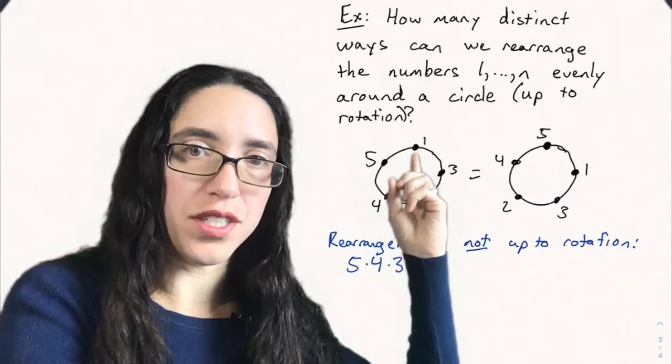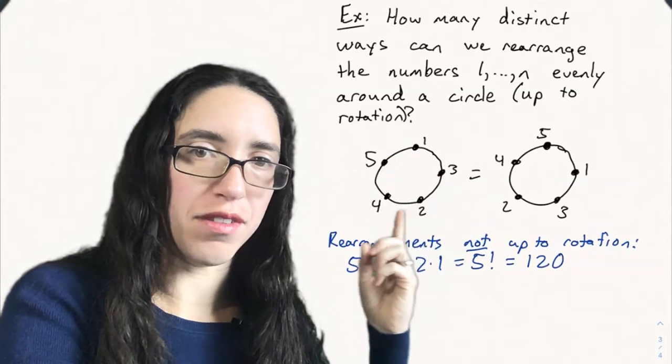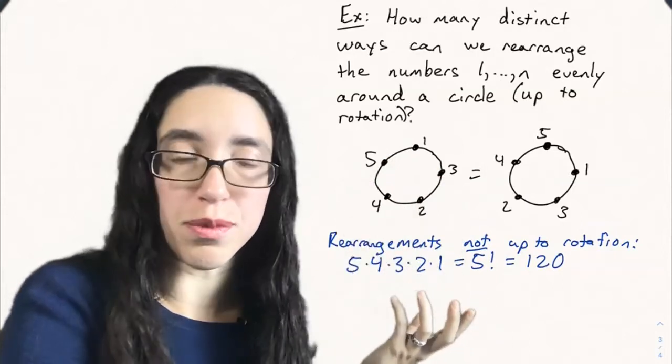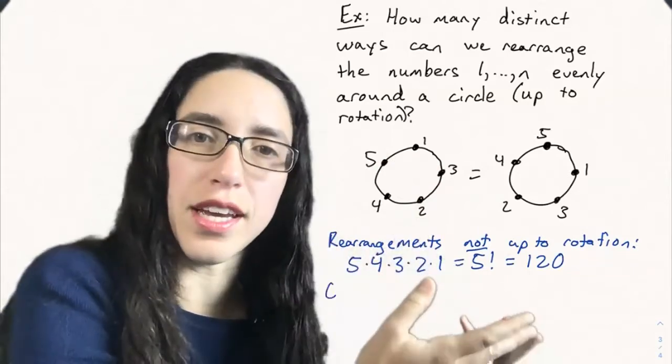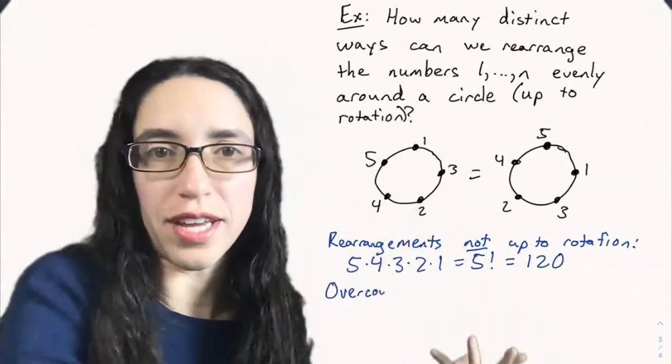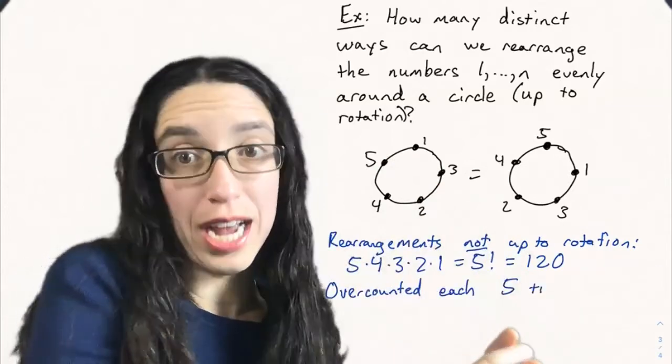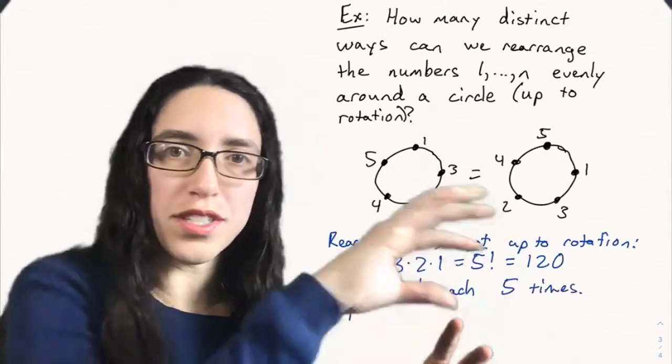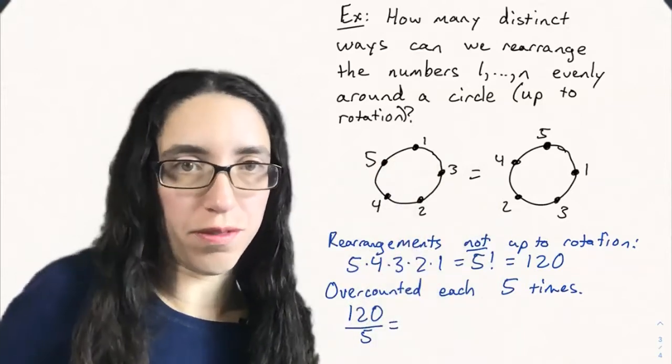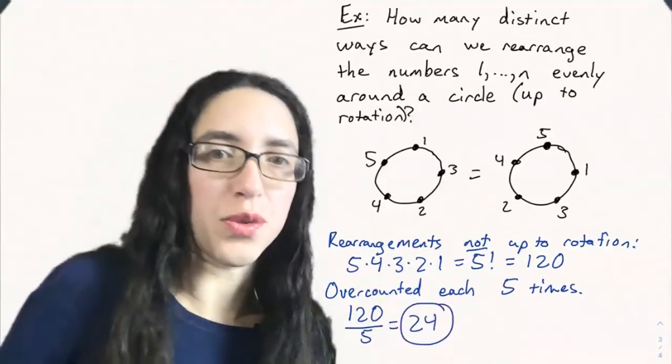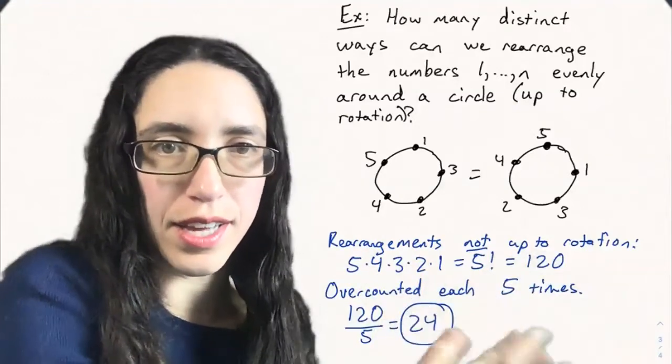So now there's five choices of what to put at the top, and then once you've chosen that, there's only four left for the second dot and three for the next and so on. Using the multiplication principle, we see that it's in this case five factorial, in general n factorial. How many times did we overcount each thing that we're actually trying to count? Well, since there's five rotations of each circle before it comes back to itself, we've overcounted by a factor of five or n in general, and so we divide by five. In this case we get 24, and generally you would take n factorial divided by n and get n minus one factorial.